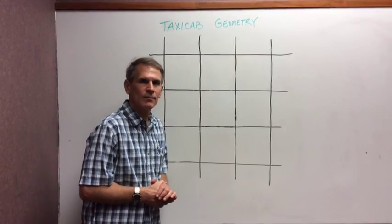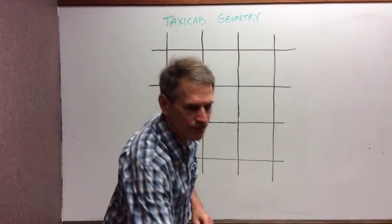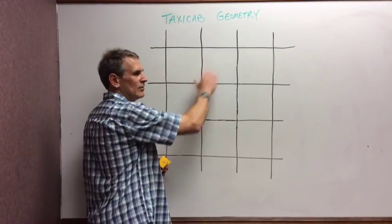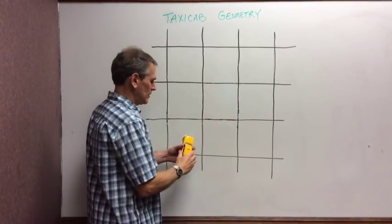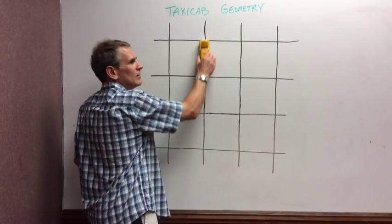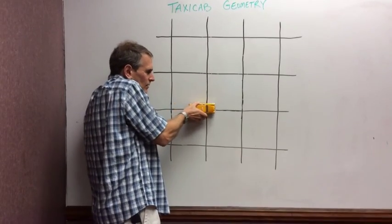Taxi Cab Geometry. Where does it get its name from? Here's a grid representing city streets. City streets go this way, right? It's a lot like Richmond, Virginia. A taxi runs down streets, right? This way, this way.